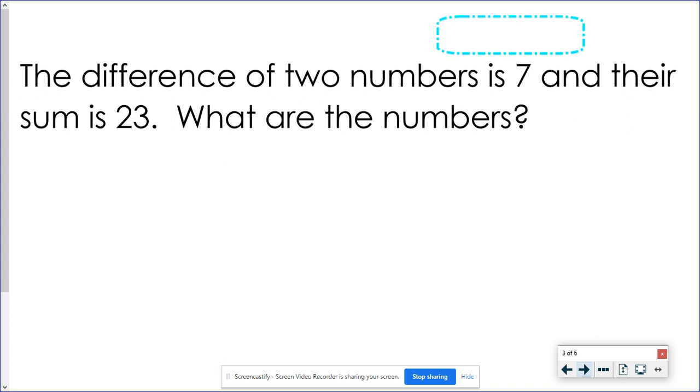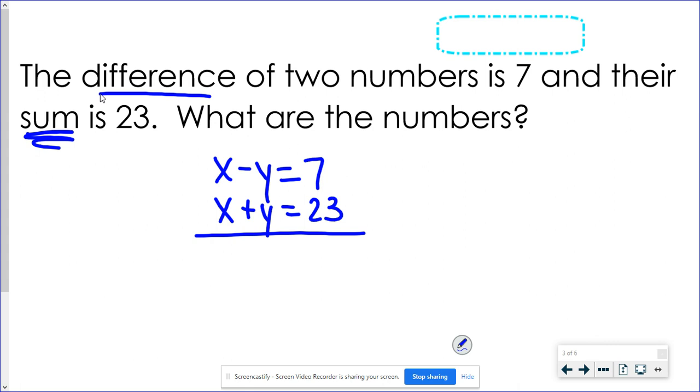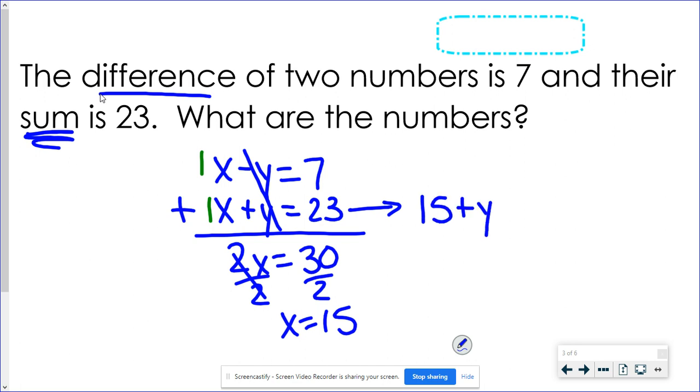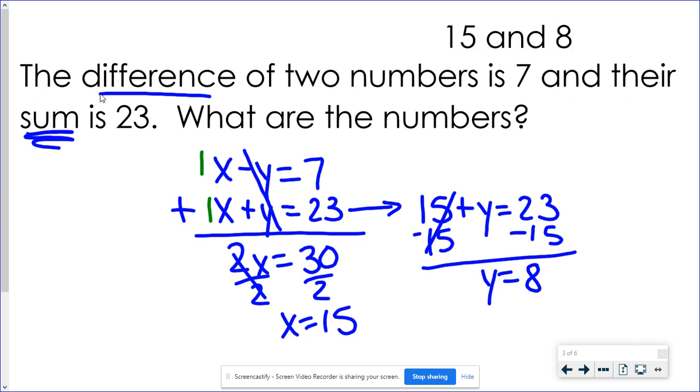Here I started this one with the difference first. So the difference of two numbers, that means X minus Y is 7. Their sum when I add I get 23. So X plus Y equals 23. When I add these two together, again don't forget that's really 1X and 1X. The Y is gone. 1X plus 1X is 2X. 7 plus 23 is 30. So the X is going to be 15. And again I like the equation with the adding so I'm going to use this one. 15 plus something equals 23. If I check the first equation 15 minus 8 I also get 7. So my numbers are 15 and 8 or 8 and 15.